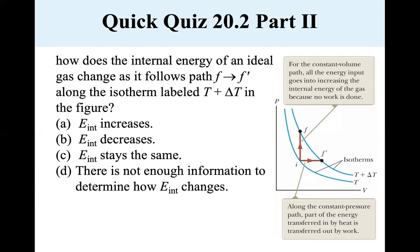And now how does the internal energy of an ideal gas change as it follows F to F prime? Well, let's follow F to F prime. That's an isotherm. So there's no change in temperature. It's T plus delta T here and T plus delta T here. So if there's no change in temperature and the internal energy is related to the temperature, then it stays the same. And sure enough, the internal energy stays the same.